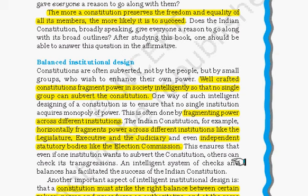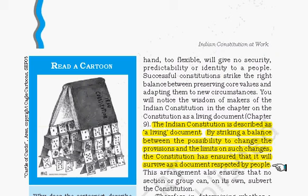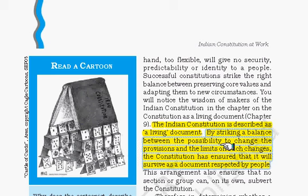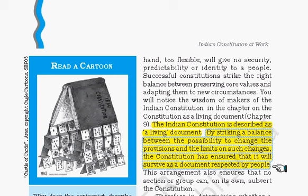Our constitution strikes the right balance between certain values and norms and procedures as authoritative, while at the same time allowing flexibility. This is why our constitution is called a living document — it strikes a balance between the possibility to change provisions and also limits on some changes. The constitution has ensured that it will survive as a document respected by people, and as time changes some amendments are required to serve society. The constitution's flexibility allows it to change as the times require.